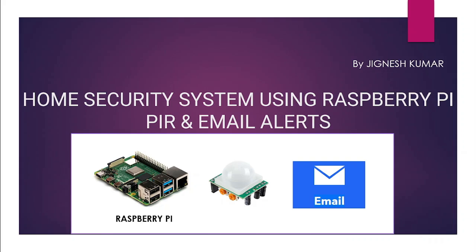Welcome everyone to a new IoT tutorial. In this tutorial we are going to create a home security system using Raspberry Pi. We are using the PIR motion detection sensor and based on the detection we are going to send email alerts. We are also using the Pi Cam, the camera sensor of Raspberry Pi, so the camera module captures the image at the moment motion is detected and the same will be sent via email to the admin.